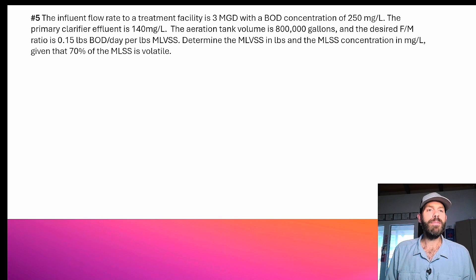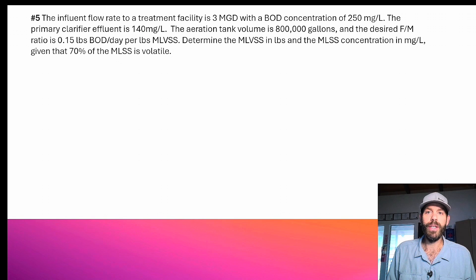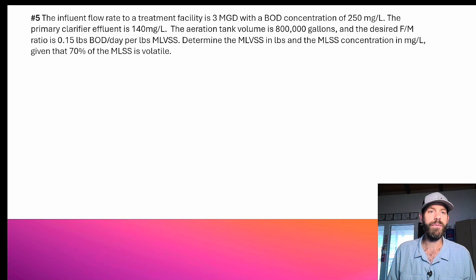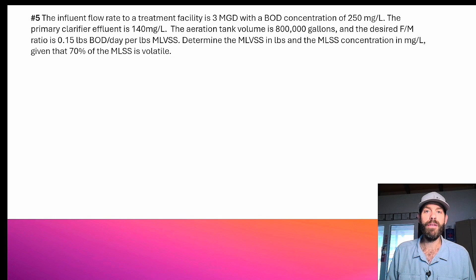So let's read this math problem. The influent flow rate to a treatment facility is 3 MGD with a BOD concentration of 250 milligrams per liter. The primary clarifier effluent is 140 milligrams per liter. The aeration tank volume is 800,000 gallons and the desired food to microorganism ratio is 0.15 pounds per day BOD per pound MLVSS. Determine the MLVSS in pounds and the MLSS concentration in milligrams per liter, given that 70% of the MLSS is volatile.